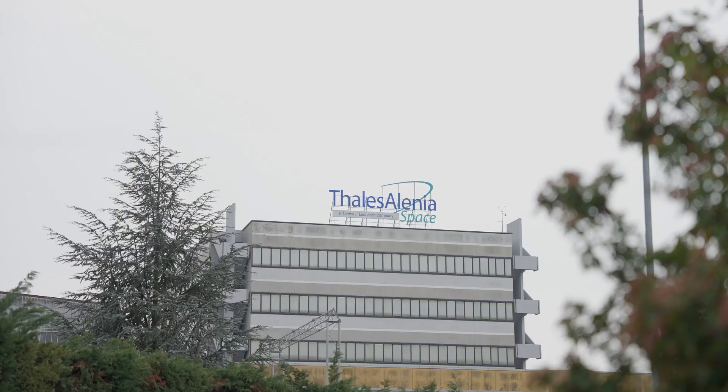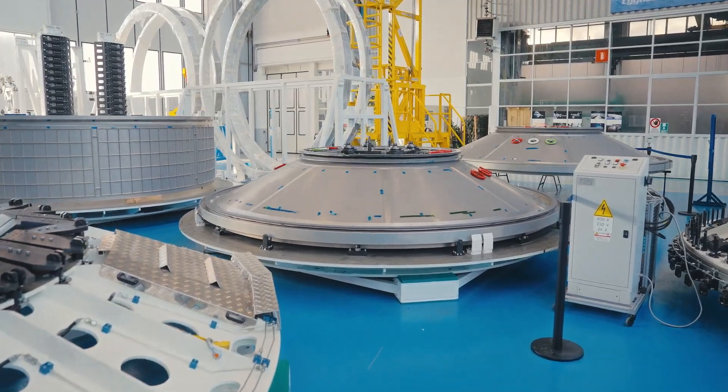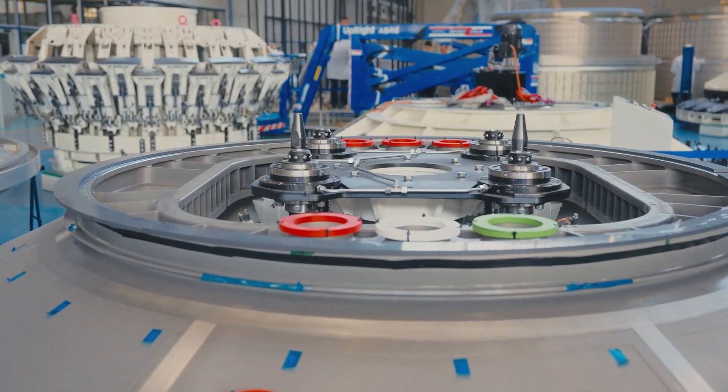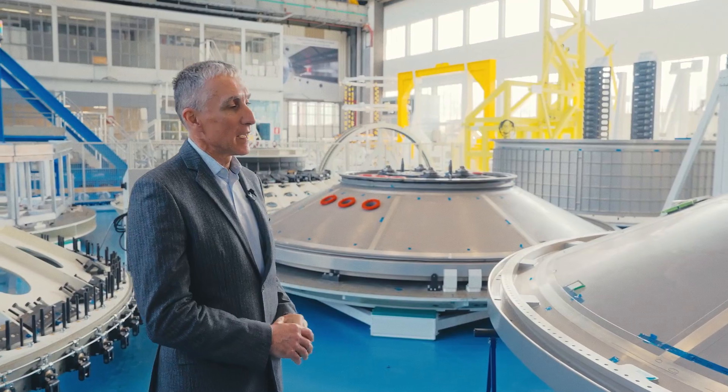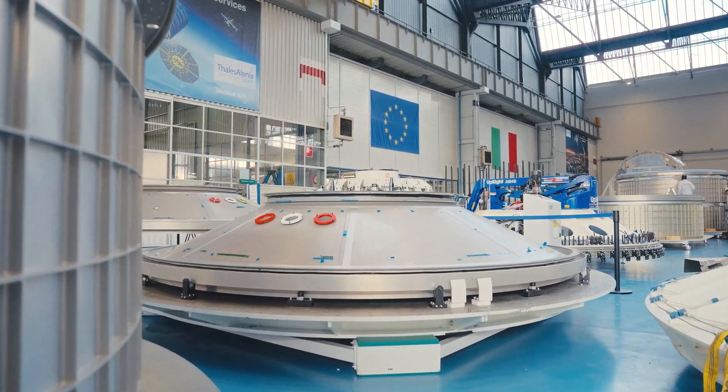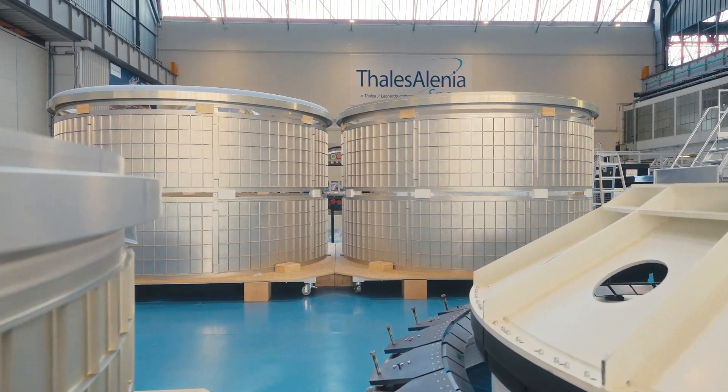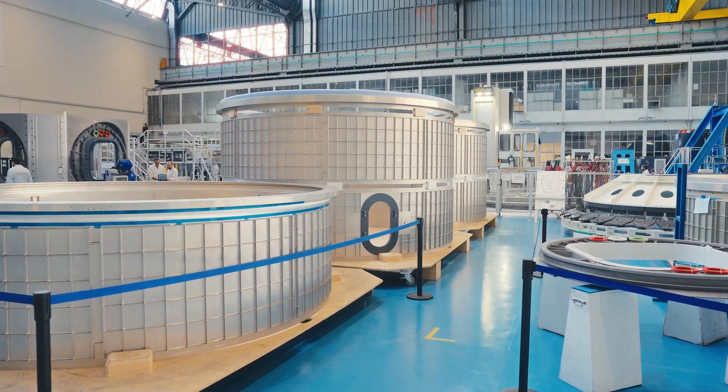We are here in the integration and manufacturing area of Thale Alenia space. Here we have the two cones that will be part of the module. It's also the gate to the module, to come in and to come out. The very big cylinder that will be the core of the module.